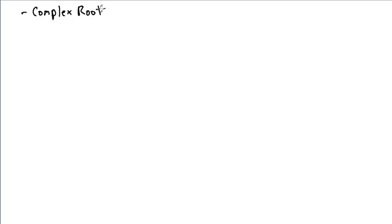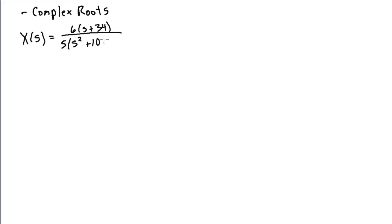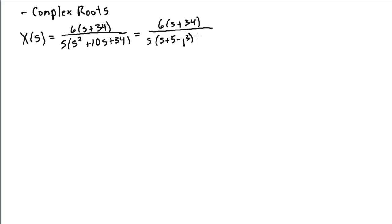Let's continue our discussion of Inverse Laplace Transforms and tackle the complex roots case. I'll look at a slightly more complicated example where X(s) is 6 over S times S squared plus 10S plus 34. The denominator is a third-order denominator. Factoring it, I find it has complex roots: S plus 5 minus j3, so the root here would be at minus 5 plus j3, and then S plus 5 plus j3.